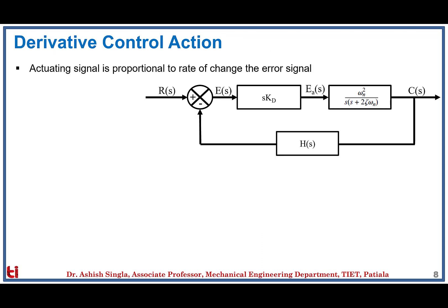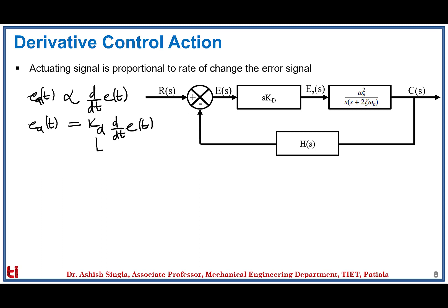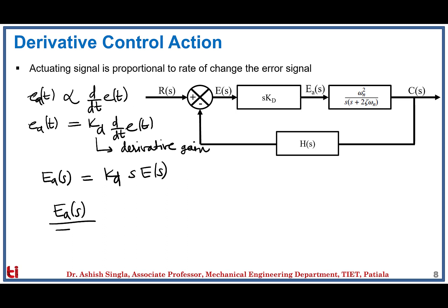Next is the derivative control action, where the actuating signal is proportional to the rate of change of error: E_a(t) is proportional to d/dt of E(t). Introducing derivative gain KD, and taking the Laplace transform, E_a(s) = KD · s · E(s). Therefore, the transfer function of the derivative controller, E_a(s)/E(s), equals KD · s.